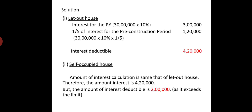Now let us compute the deductible amount of interest. For a let-out house, we will calculate the interest deductible amount. Let-out house: interest is Rs. 3 lakhs current year, plus pre-construction period interest to be added.